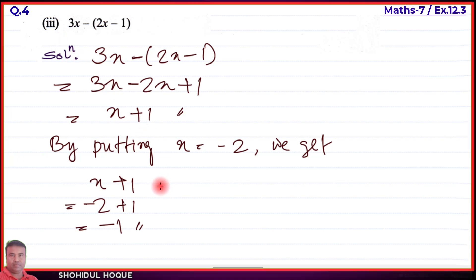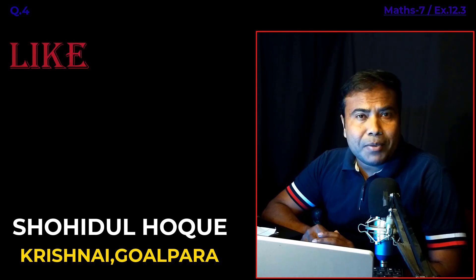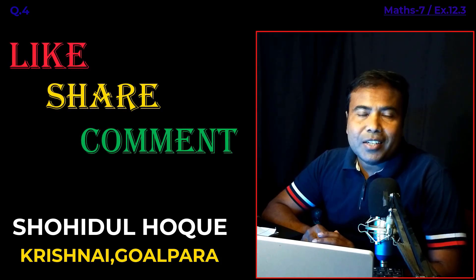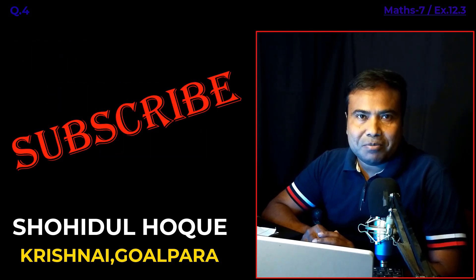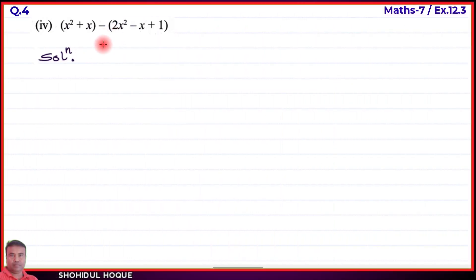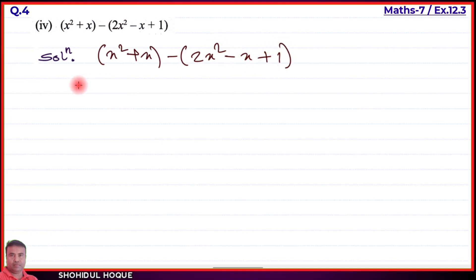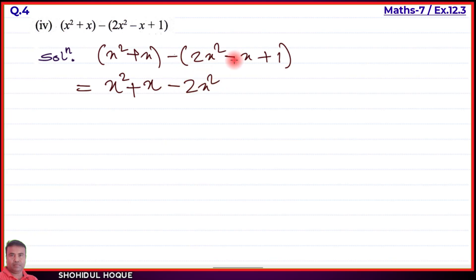Part number three solved. Part number four: please like and subscribe the channel. Now part number four expression is x square plus x minus (2x square minus x plus 1). For the first bracket there is no minus outside, so we can remove it directly without change. But when removing the second bracket, since there is a minus sign outside, all signs inside change: minus 2x square becomes plus, minus x becomes plus, and plus 1 becomes minus.